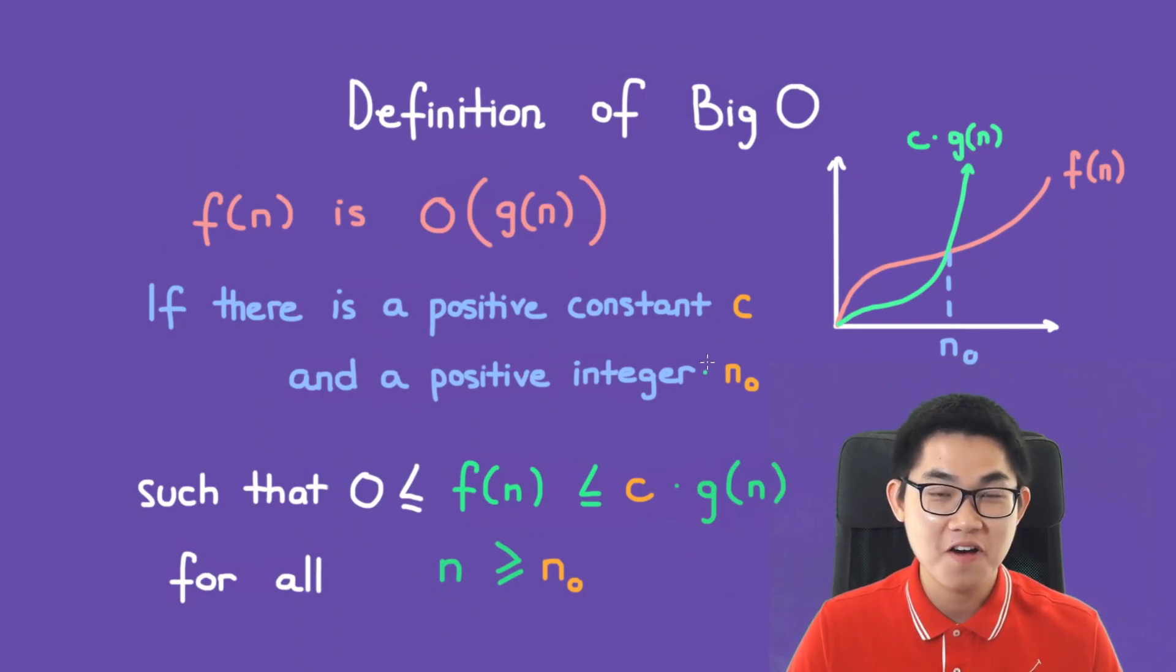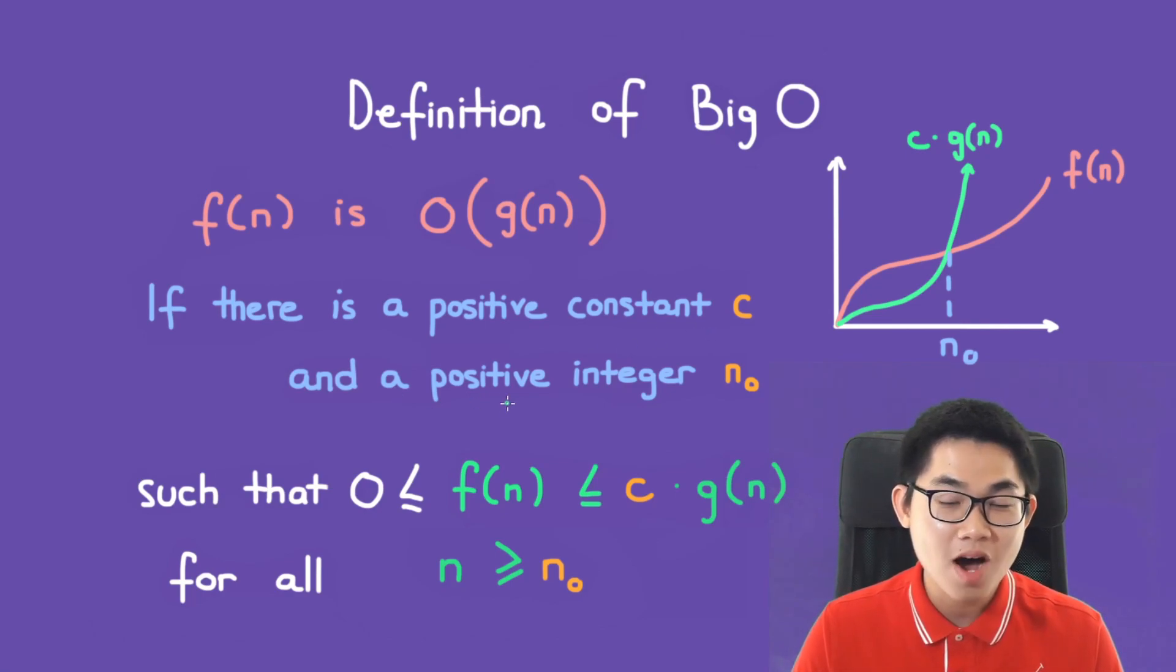The official definition of Big O is that f(n) is O(g(n)) if we can find a positive constant c (can be a number or a decimal) and a positive integer n₀ such that this inequality is true. So f(n) is always smaller or equal to c times g(n).